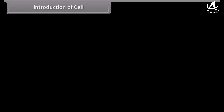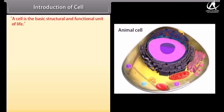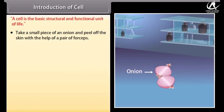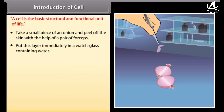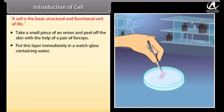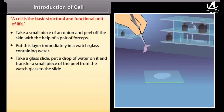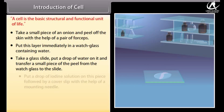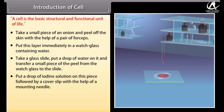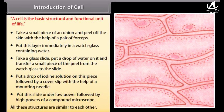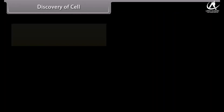A cell is the basic structural and functional unit of life. Experiment: Take a small piece of an onion and peel off the skin with the help of a pair of forceps. Put this layer in a watch glass containing water. Place a drop of water on a glass slide and transfer a small piece of the peel onto it. Put a drop of iodine solution on this piece, followed by a cover slip. Put this slide under low power followed by high powers of a compound microscope. All these structures are similar to each other.